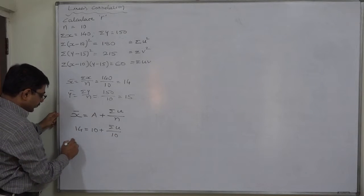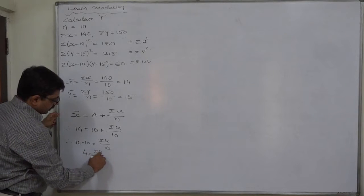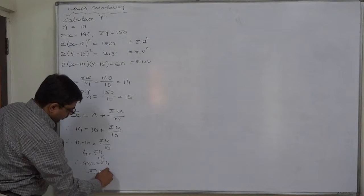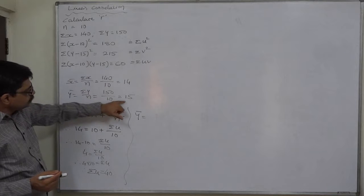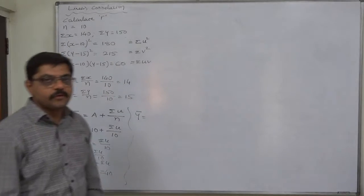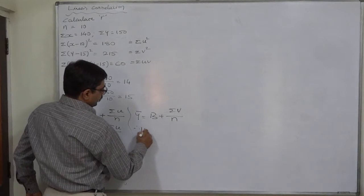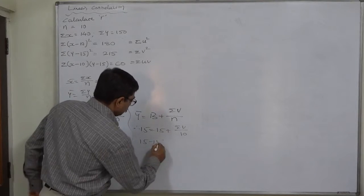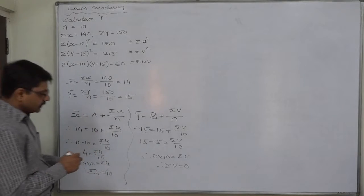Shifting 10 to the other side: 14 − 10 = σu/10, so 4 × 10 = σu, therefore σu = 40. Similarly for y: the assumed mean and actual mean are the same (both 15), which means this can be treated as deviations from the actual mean, and we know the summation of deviations from the actual mean is always zero. So: 15 = 15 + σv/10, giving 0 × 10 = σv, therefore σv = 0.